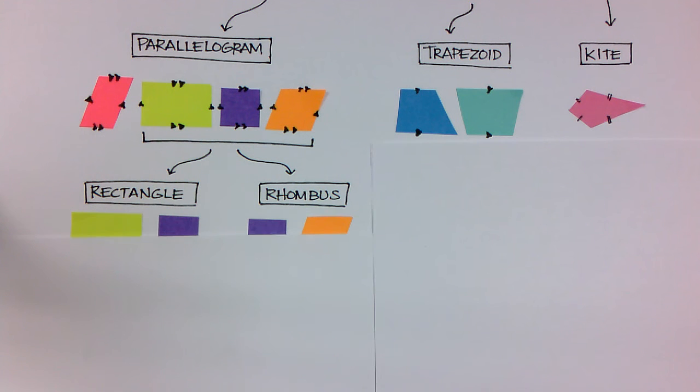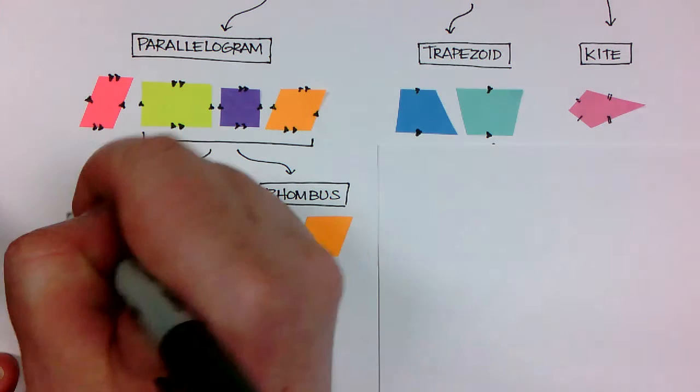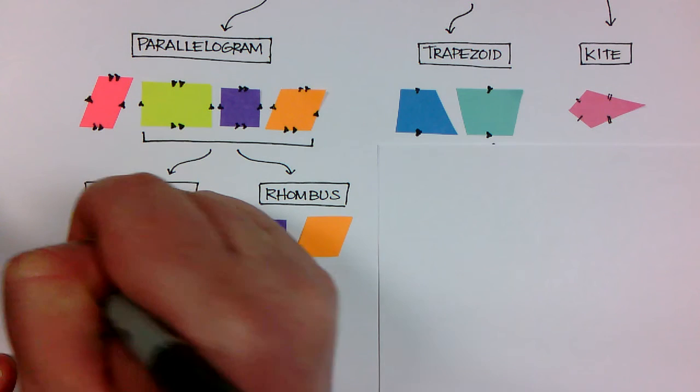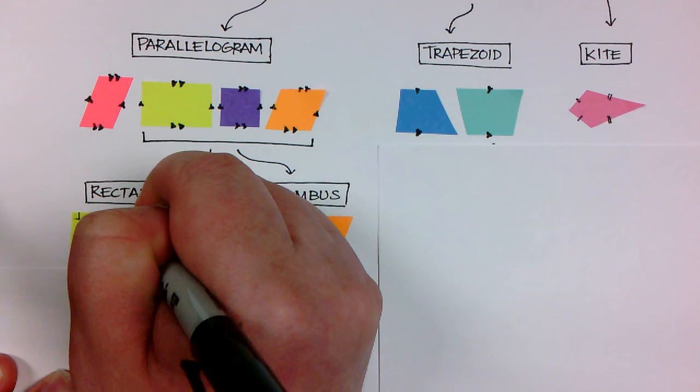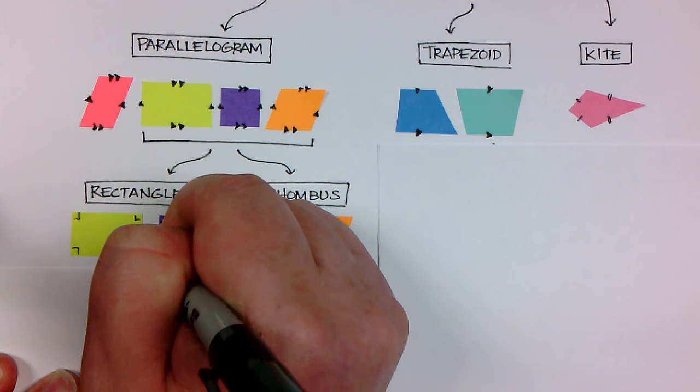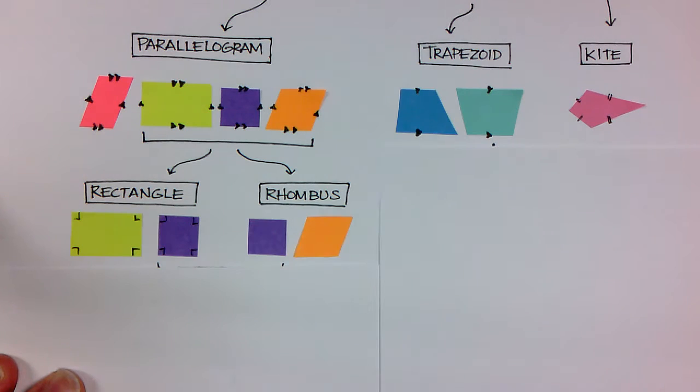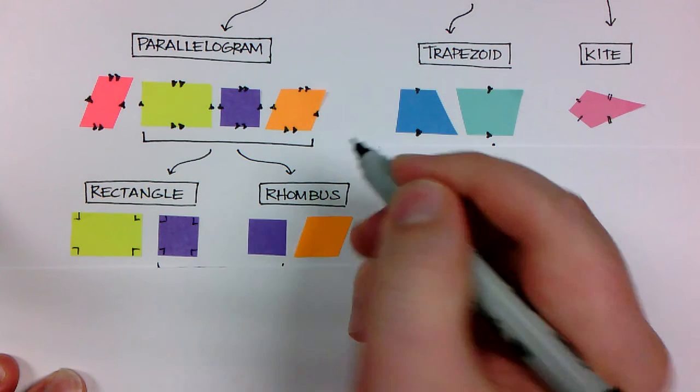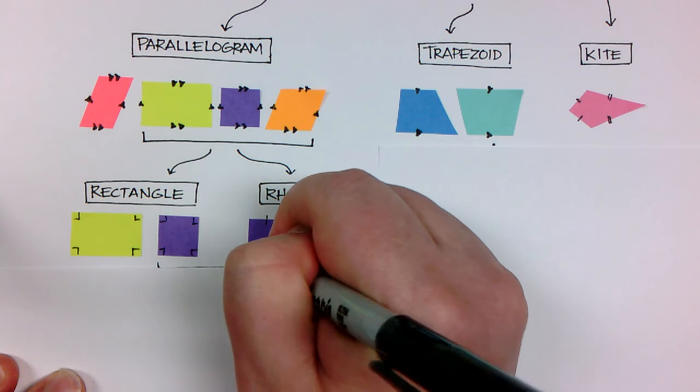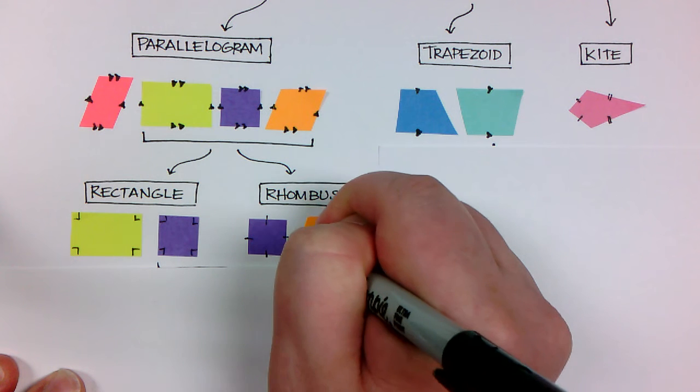For instance, both the green and the purple would be considered rectangles. The reason is because they have four right angles in each of those shapes. Whereas the purple and the orange would be considered a rhombus because every side is the same measurement.